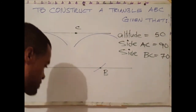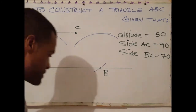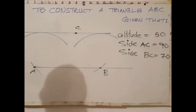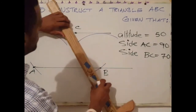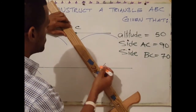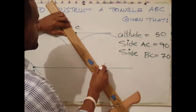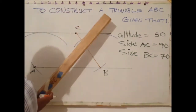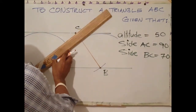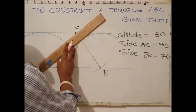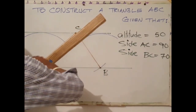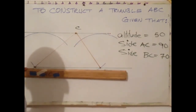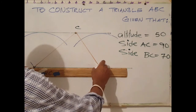The next step is to join B to C, then C to A, and also A to B — connecting the distance between both arc intersections to complete the triangle.